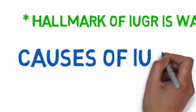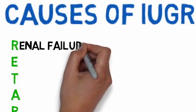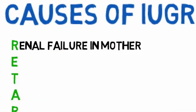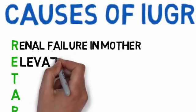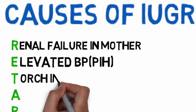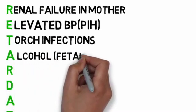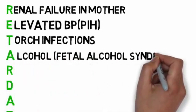Causes of IUGR — the mnemonic is RETARDATION: Renal failure in mother, Elevated BP i.e. PIH, TORCH infections, Alcohol i.e. fetal alcohol syndrome.